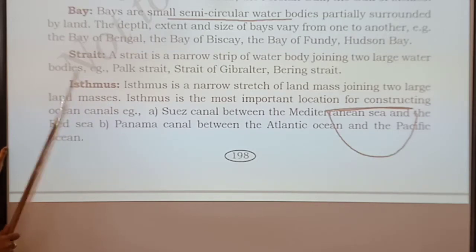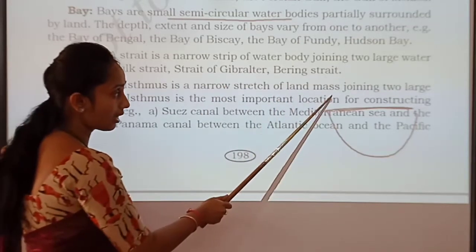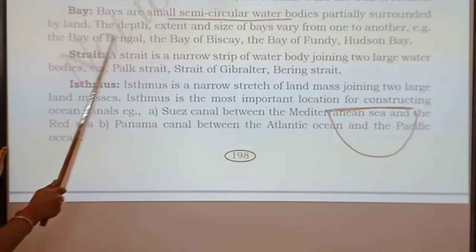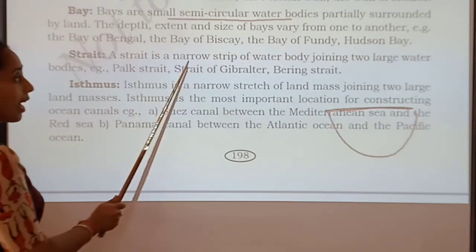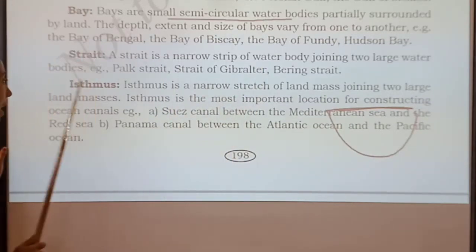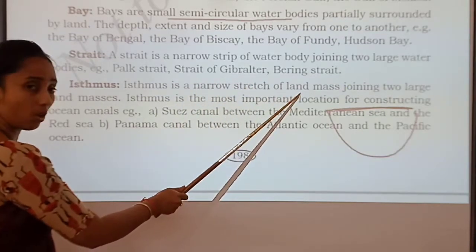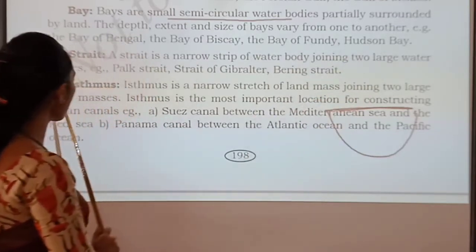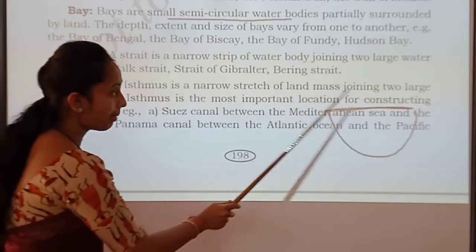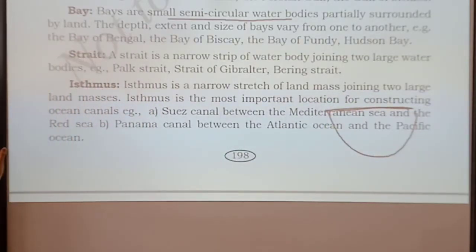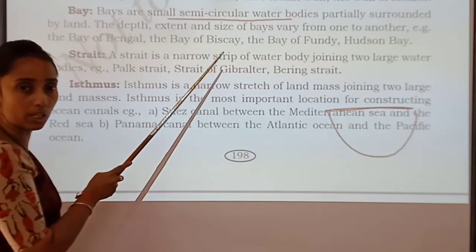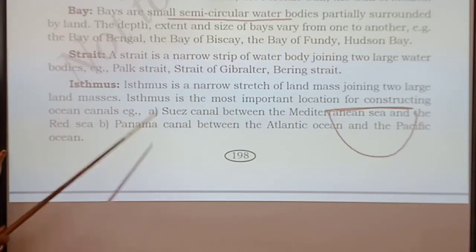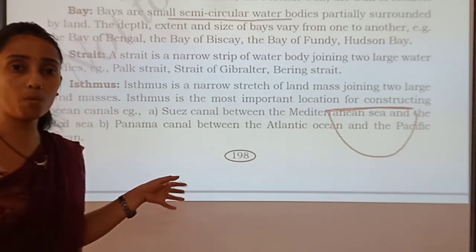What do you mean by isthmus? An isthmus is a narrow stretch of land mass joining two large land masses. What is the difference between strait and isthmus? A strait is a narrow strip of water body, whereas an isthmus is a narrow stretch of land mass. This is water and this is land mass — the water body joins two large water bodies, whereas an isthmus is a land mass joining two land masses only.